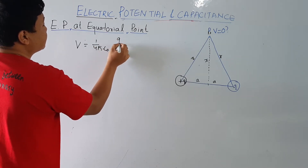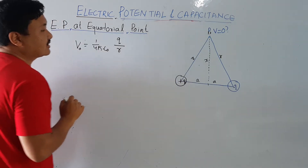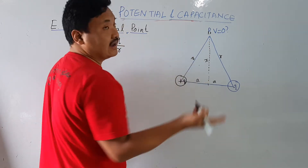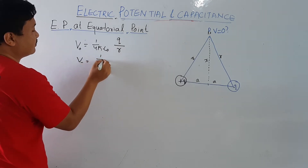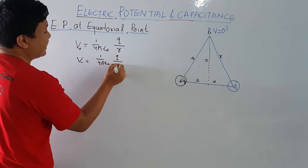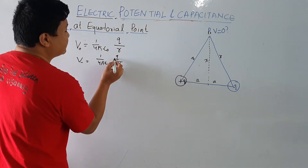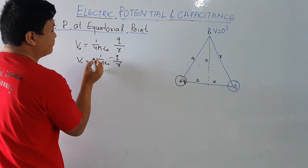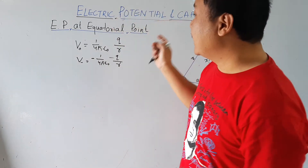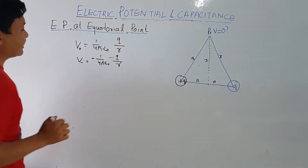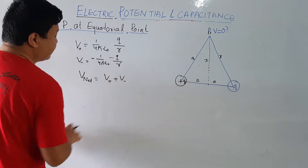The formula is V = (1/4πε₀)(q/r). For the positive charge, V positive will be positive, and the distance from the positive charge to point P is r. So V of negative is equal to (1/4πε₀)(q/r), and in potential you have to put the sign of the charge, so it becomes negative. The net potential at point P is V_net = V_positive + V_negative.